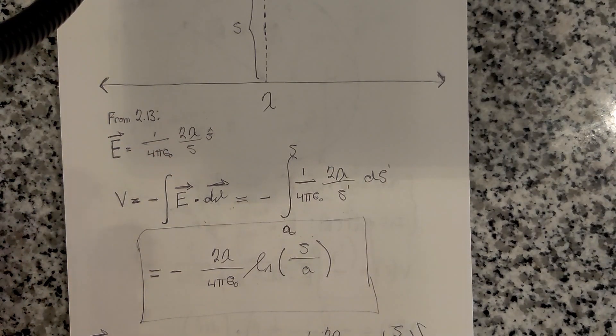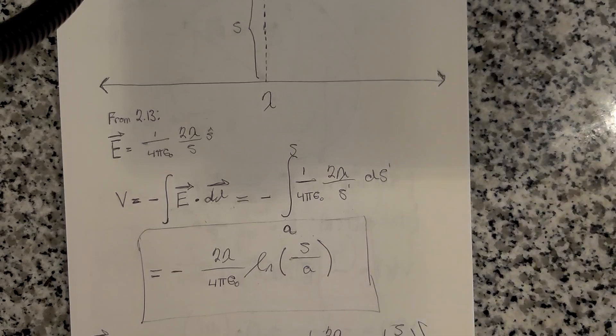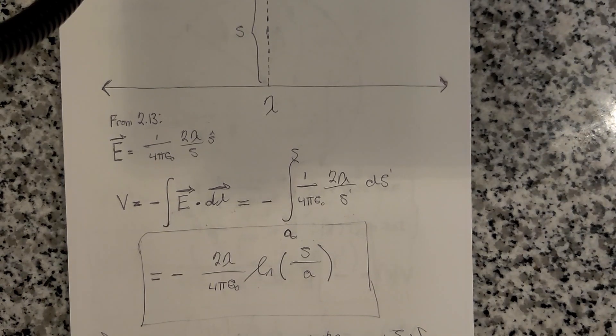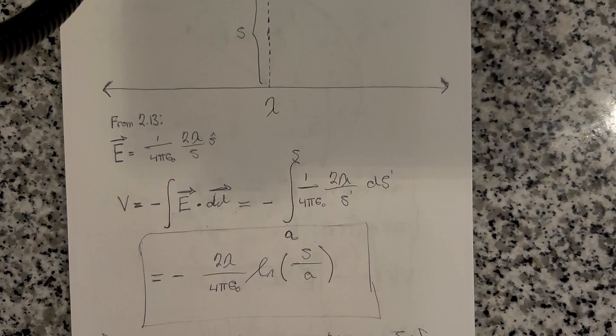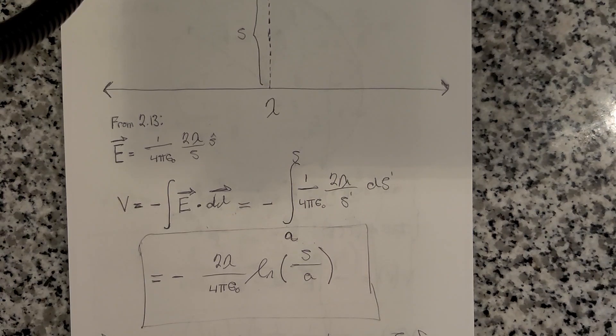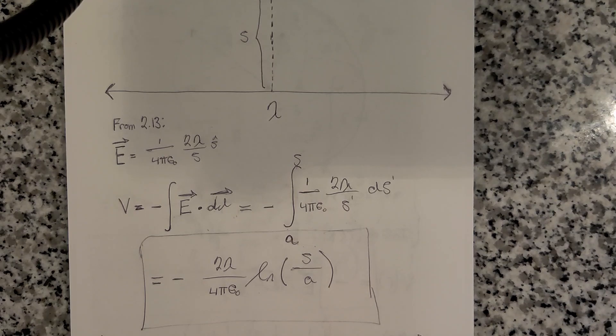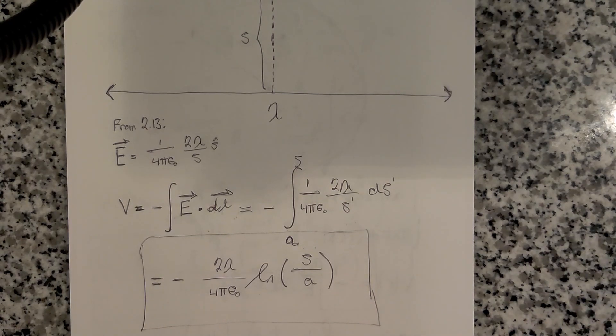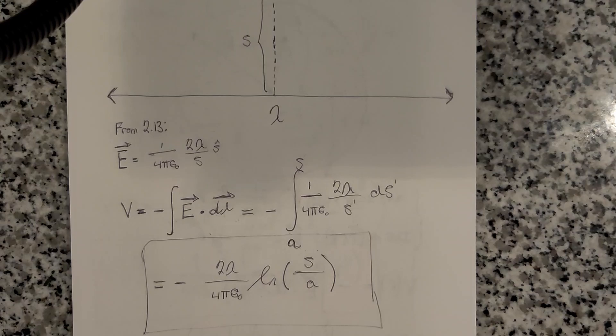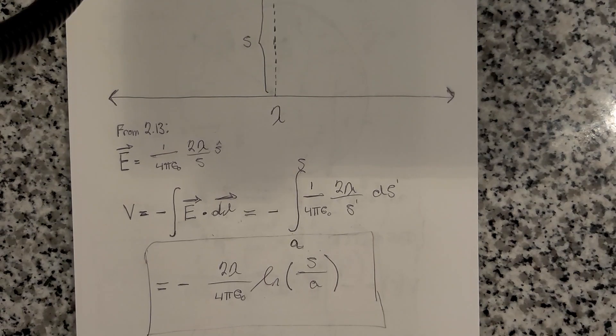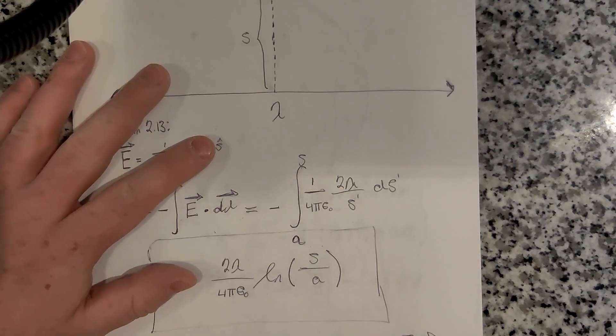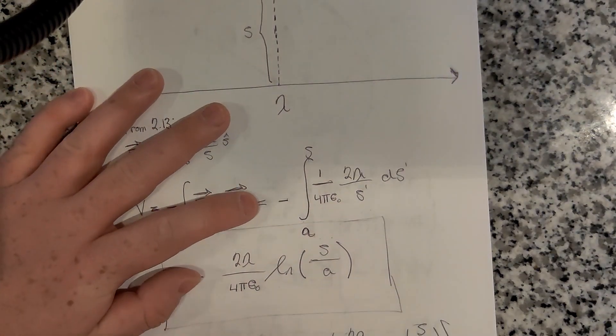This is going to be a gradient, and this is in cylindrical coordinates. So let me look up the gradient in cylindrical coordinates real quick in the front of the book. Okay, so we're going to have the derivative of it with respect to s. We don't have any phi or z components here. It's just going to be the derivative of this with respect to s. Easy enough.